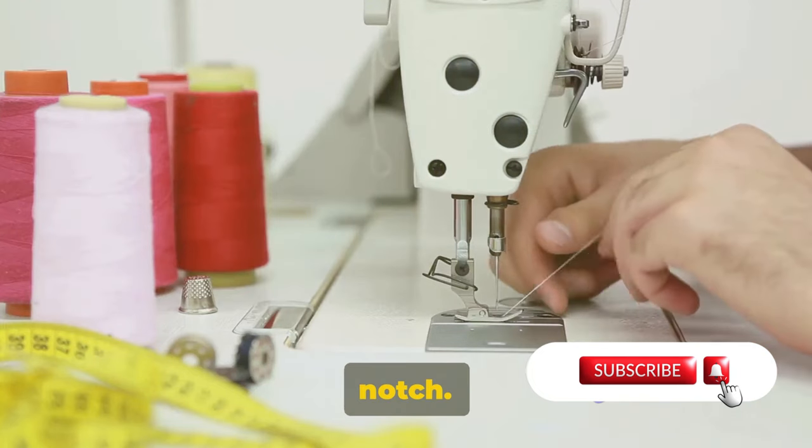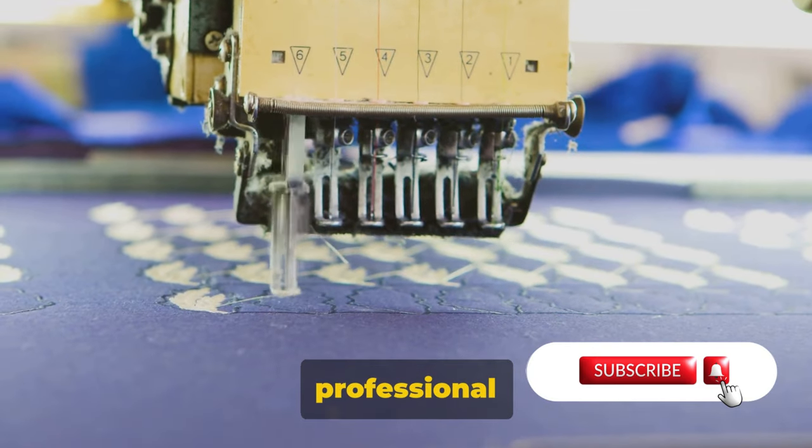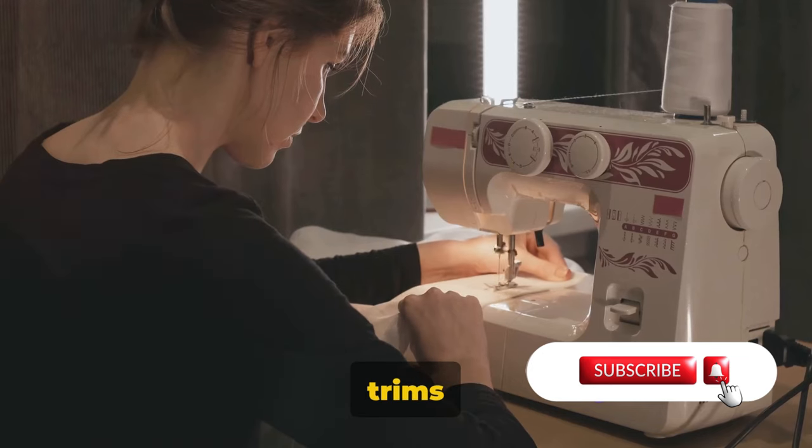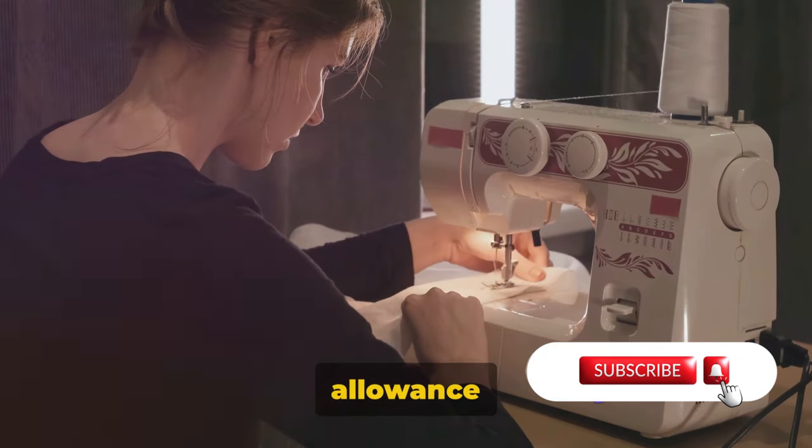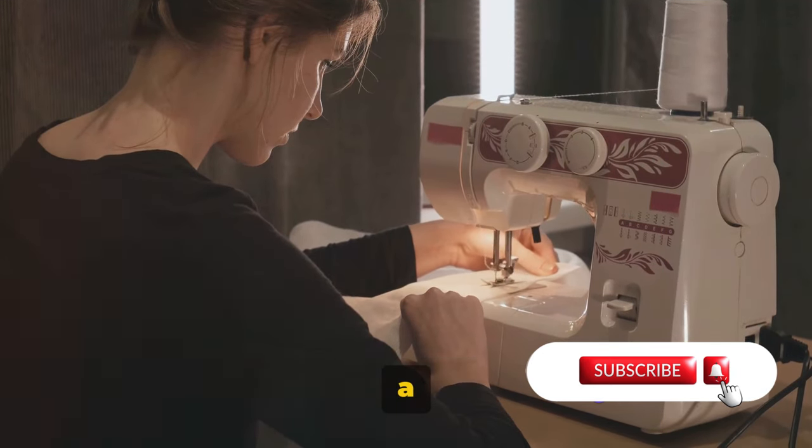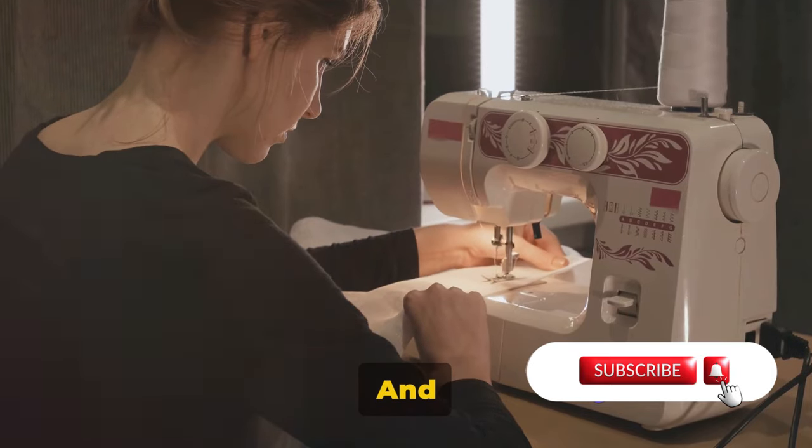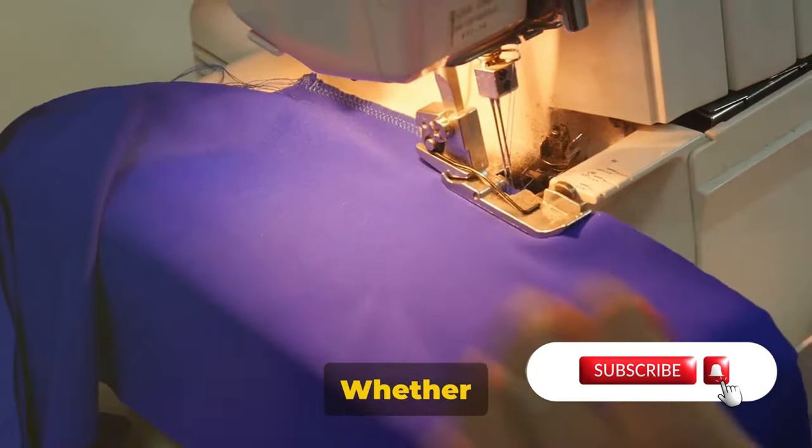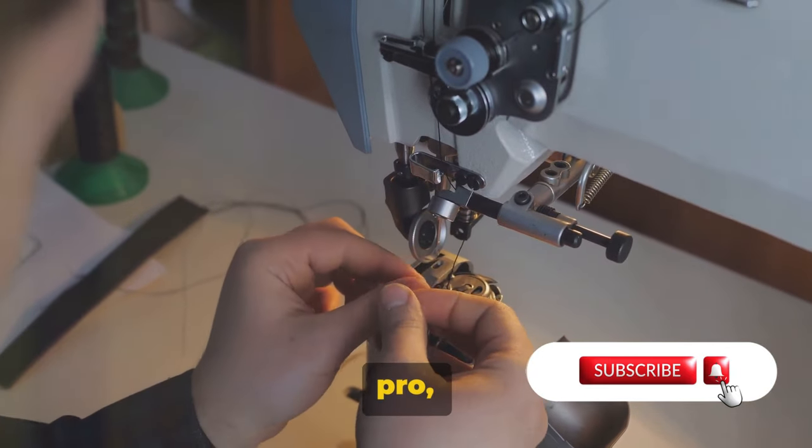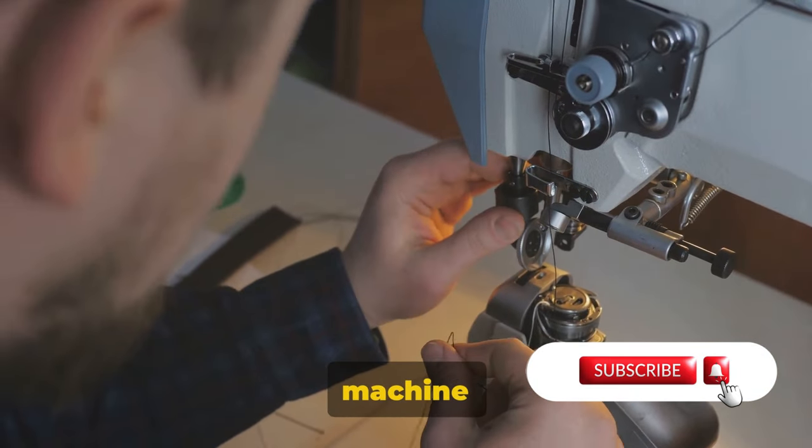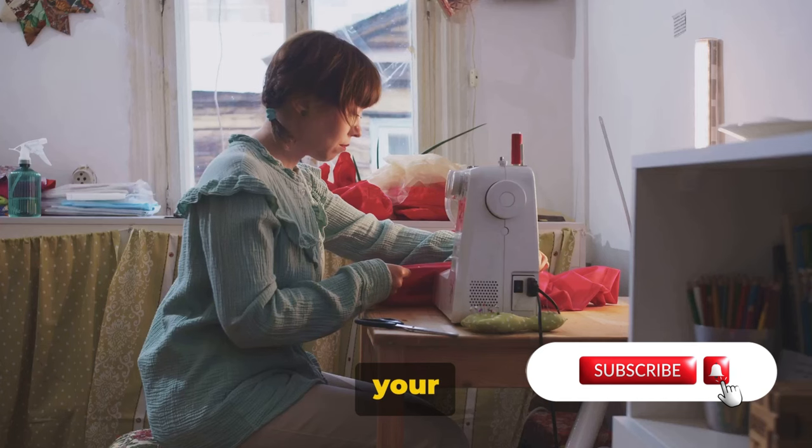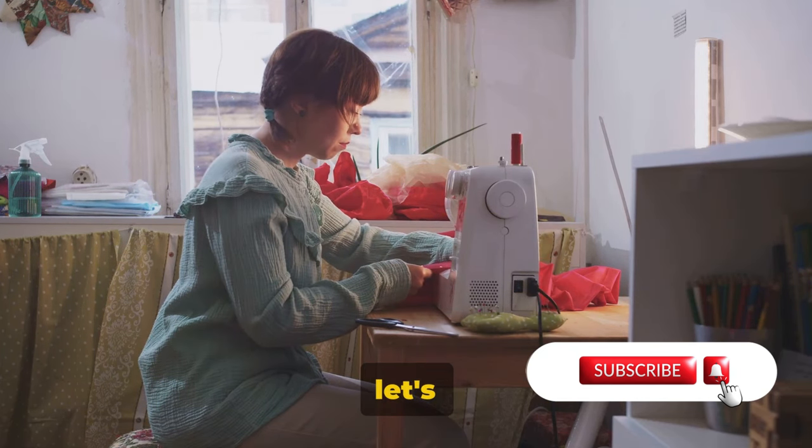Now let's step it up a notch. For those seeking a more professional finish, we introduce the serger or overlock machine. This specialized machine trims the seam and encloses the seam allowance within the thread, creating a clean and durable finish. And voila, that's how you sew a t-shirt using a sewing machine. Whether you're a beginner or a seasoned pro, understanding the mechanics of your machine can elevate your sewing projects to new heights. So grab your fabric, thread your needle, and let's get sewing. Happy sewing!